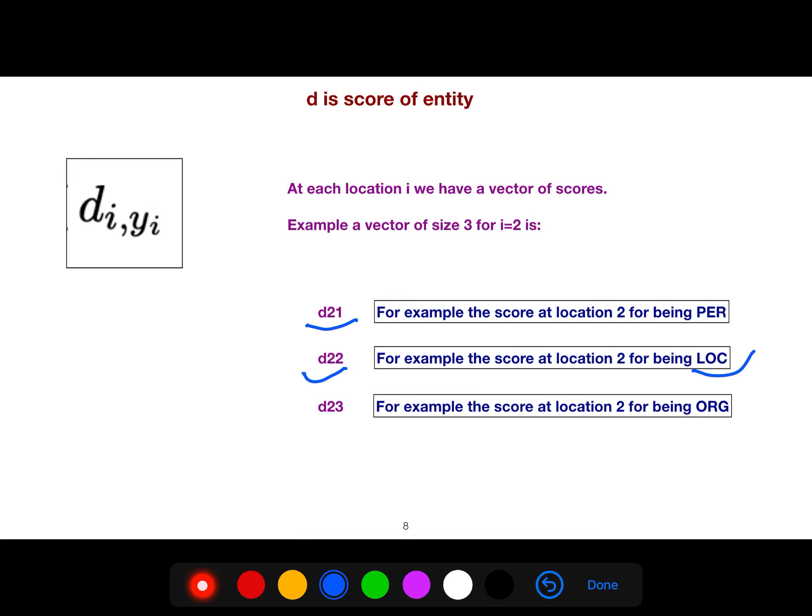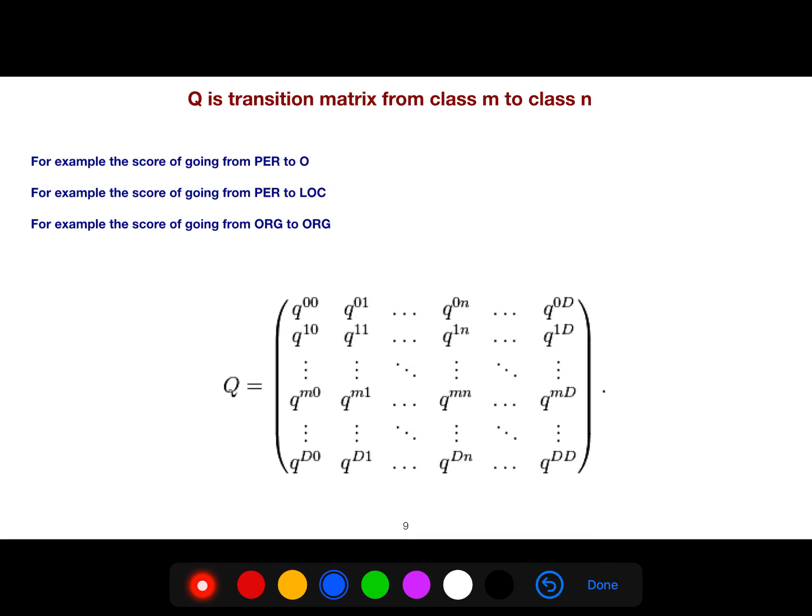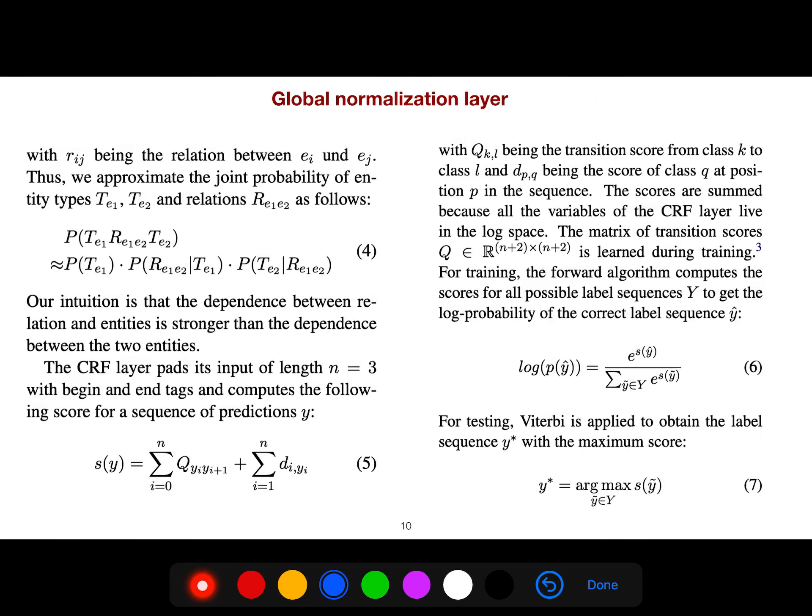At each location, we have a vector of scores. These are the same ideas—transition scores, like going from organization to organization. This is the transition matrix of CRF. Now for global normalization...